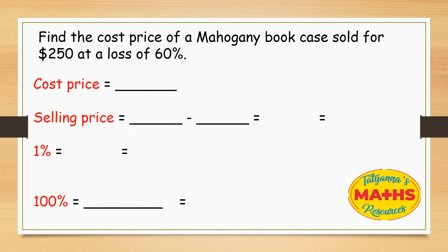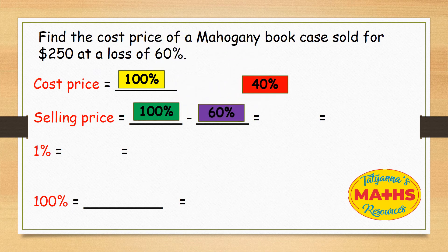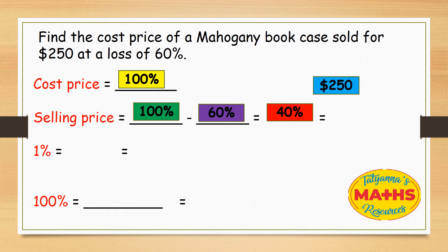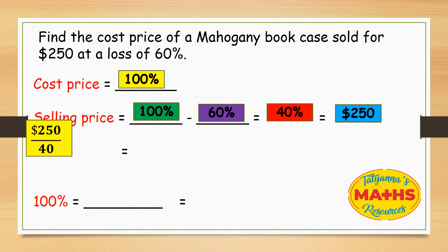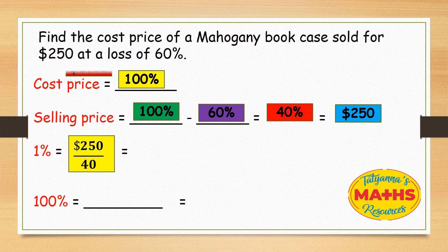The cost price is 100%. The selling price is going to be 100% minus 60%, which gives us 40%. And that 40% is equal to $250. So for 1%, we take $250 and divide it by 40, which gives us $6.25.